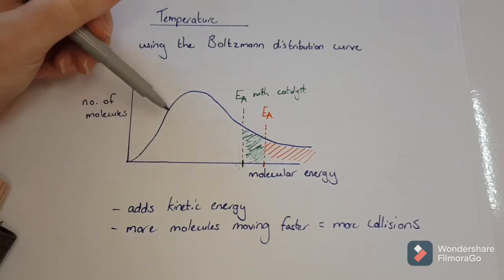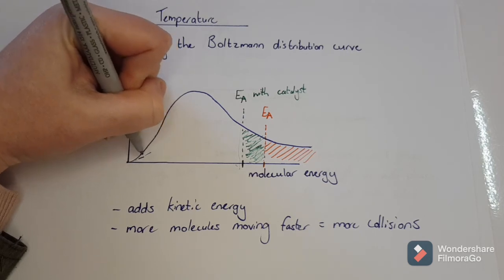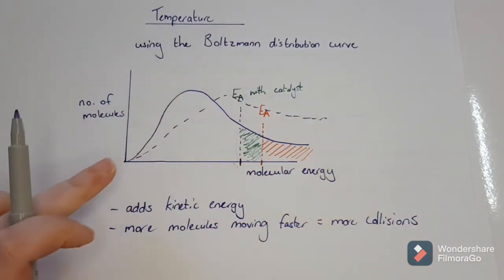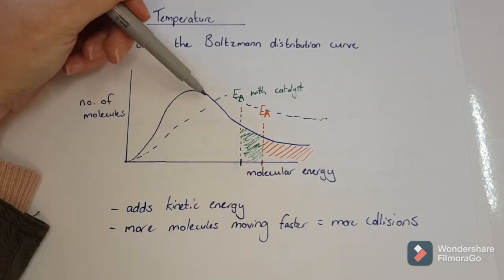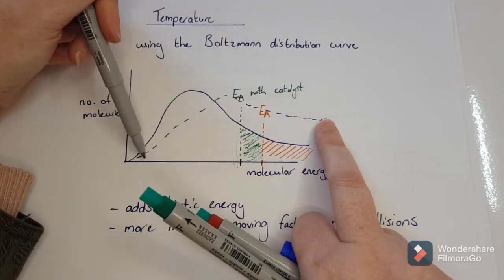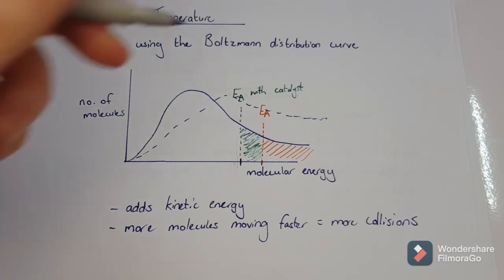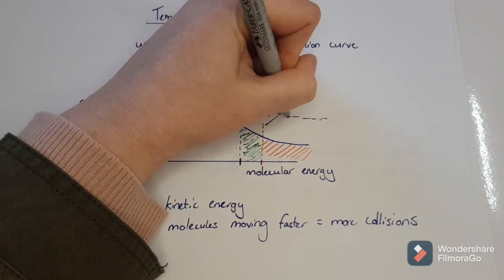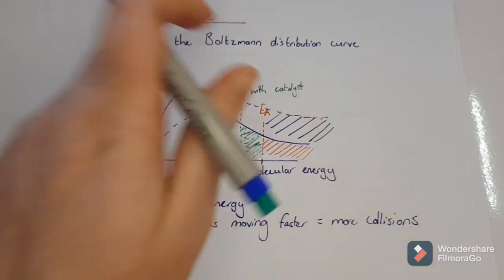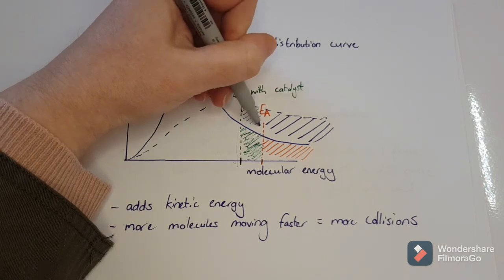Temperature shifts the whole curve over to the right. On the curve, there is a certain number of molecules with a certain energy. By shifting, I give more molecules higher energy — so you always shift your curve over to the right, and it always ends much higher than where you started. That means where the original activation energy was, all of those additional molecules can now also react. Shifting the temperature does not change the catalyst's activation energy — if you do both, the catalyst still lowers Ea and more molecules react.